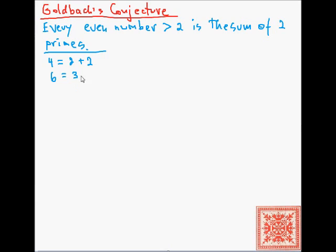4 is equal to 2 plus 2, even number greater than 2. 6 is equal to 3 plus 3. Then we have 8, 3 plus 5. Or 10, 5 plus 5, and then 12 would be 5 plus 7. So 10 is 3 plus 7 or 5 plus 5, and so forth.